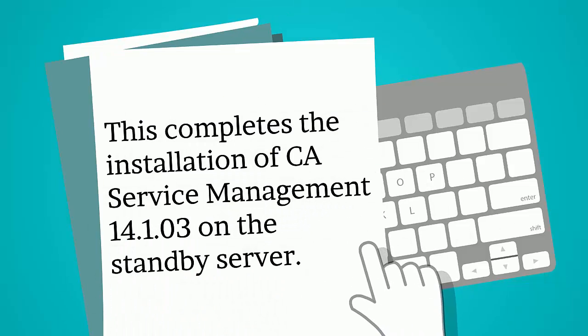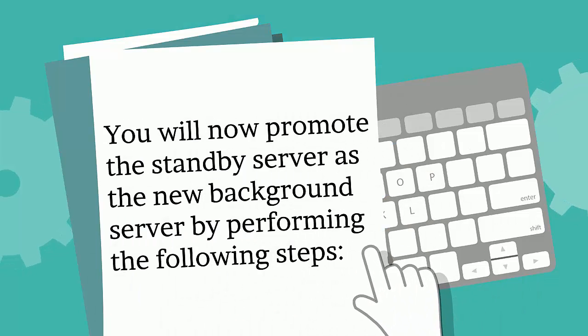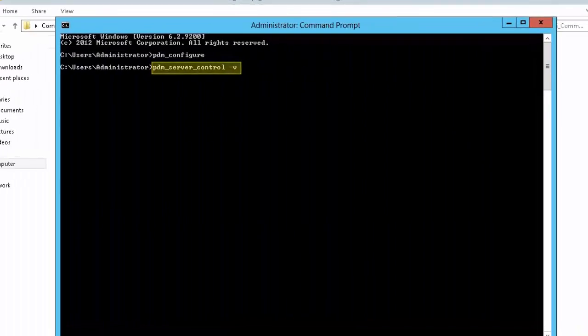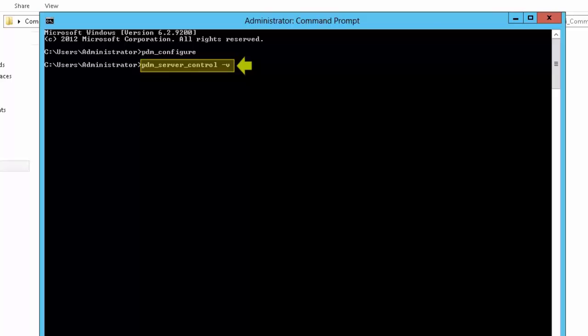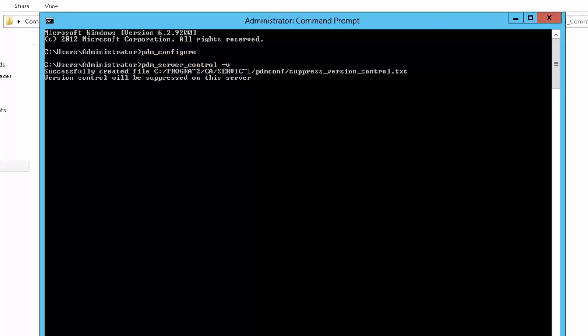This completes the installation of CASDM 14.1.03 on the standby server. You will now promote the standby server as the new background server by performing the following steps. Run the command PDM_server_control -V to suppress version control on the standby server. Then run PDM_server_control -V to promote this standby server as the new background server.